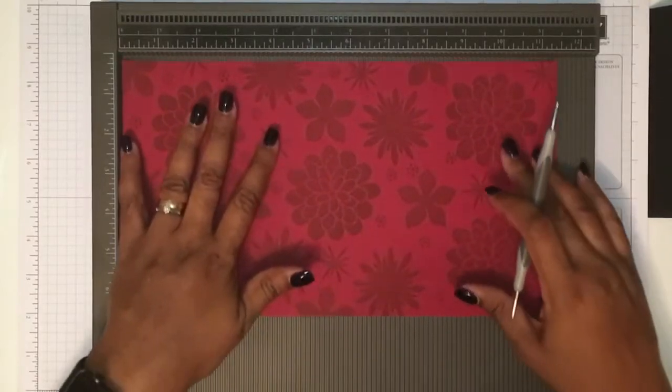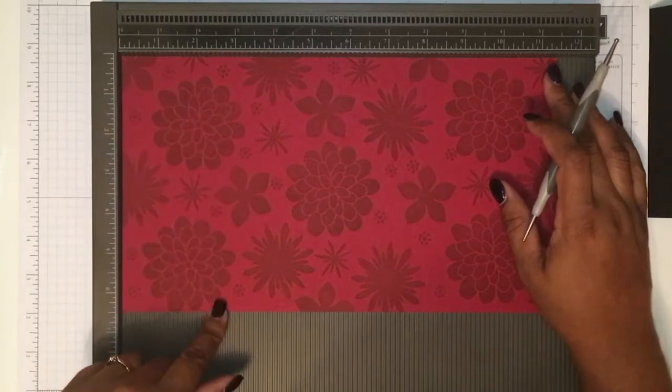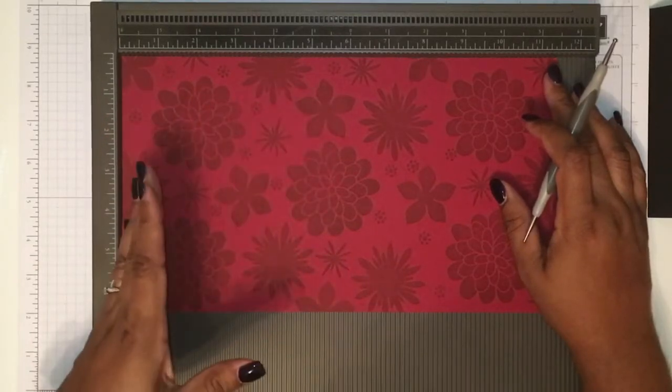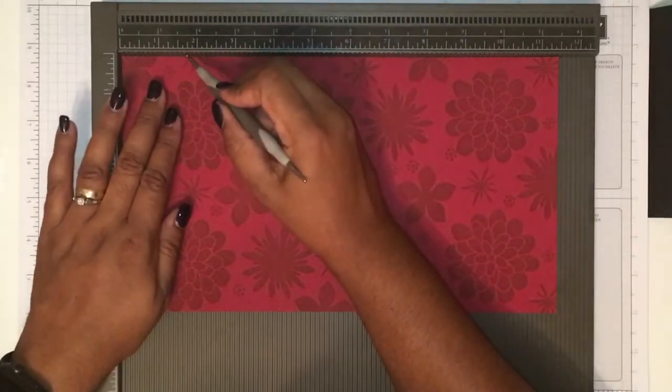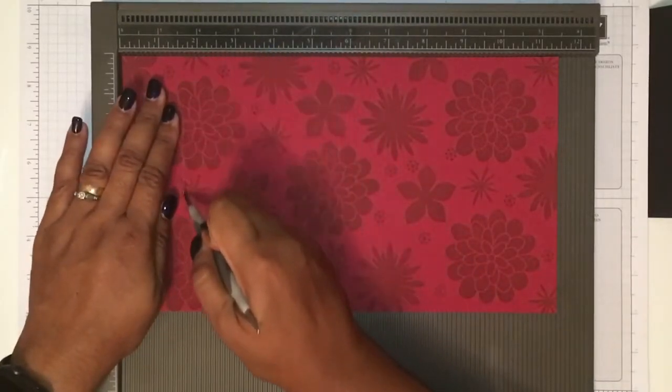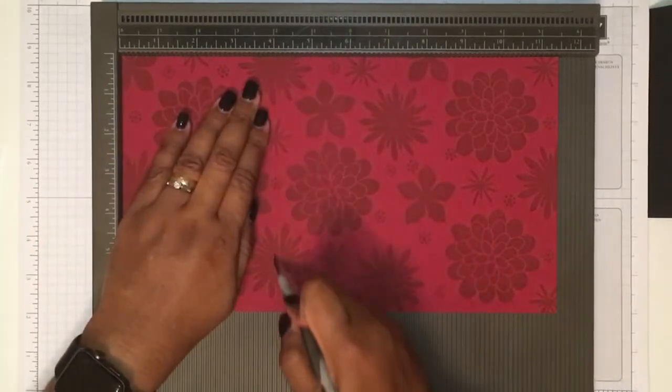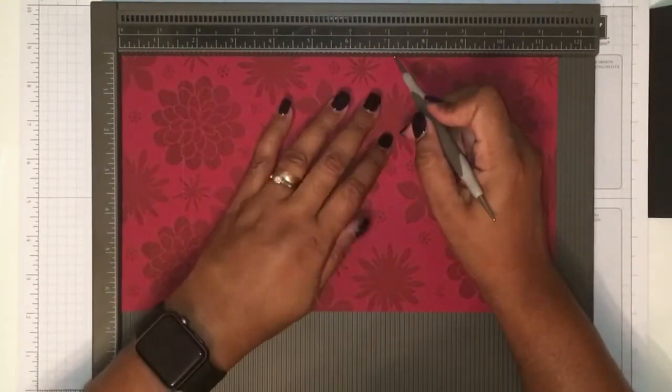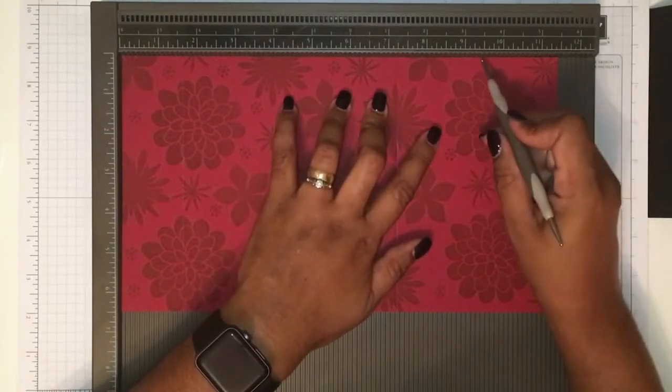So this wrap is eleven and a half by six and a half inches and we're gonna score on the long side at one and five eighths, four, seven and one quarter, and nine and five eighths.